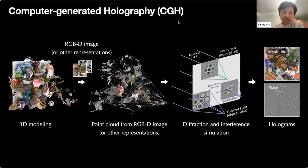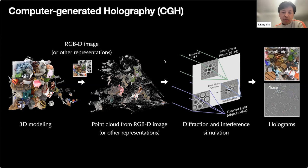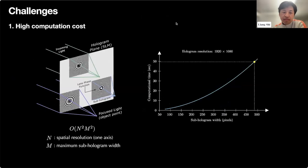When we digitize this process, it's called computer-generated holography (CGH). A typical calculation starts by modeling a 3D scene, turning it into a digital representation such as an RGB-depth image, and reprojecting it to get a point cloud. For every point, we mimic the interference process by projecting a spherical wave from each point to the hologram plane as zone plate patterns. Integrating these zone plates gives the final hologram, which has both amplitude and phase by nature of the wave.